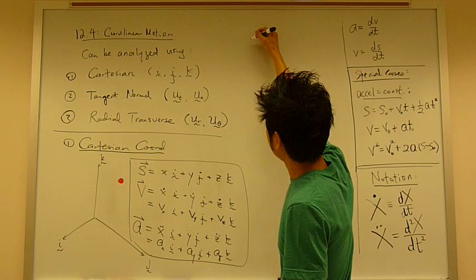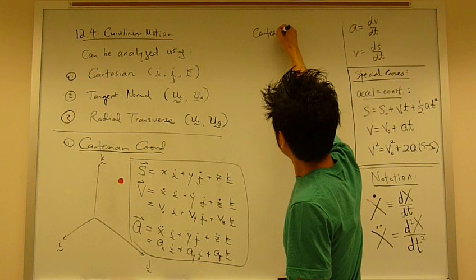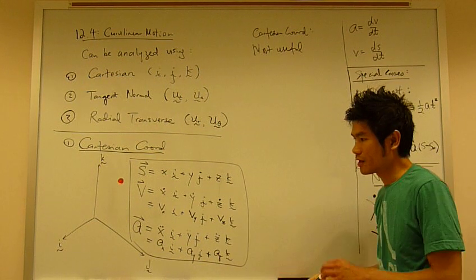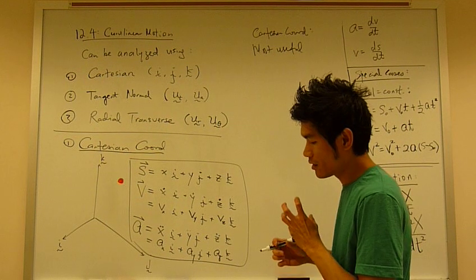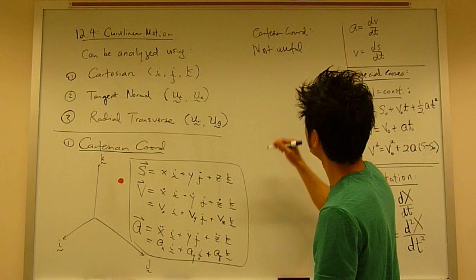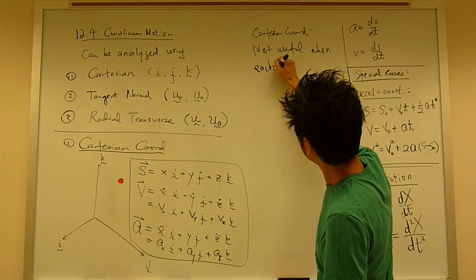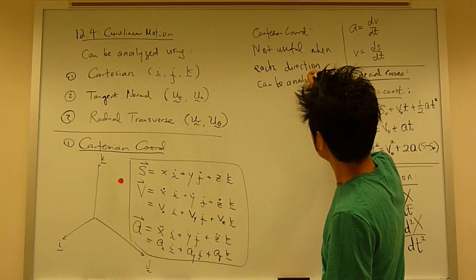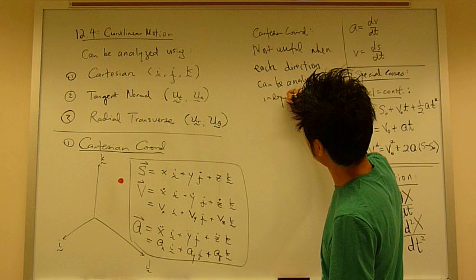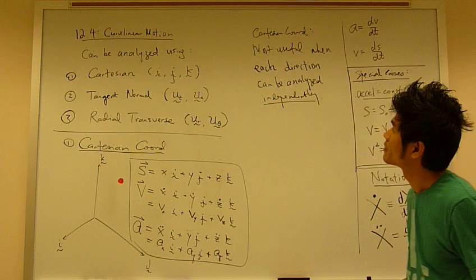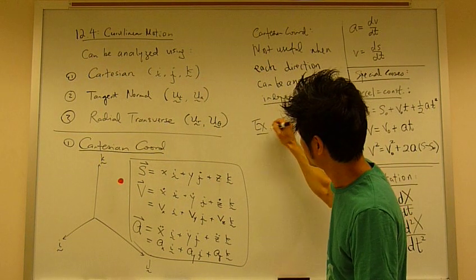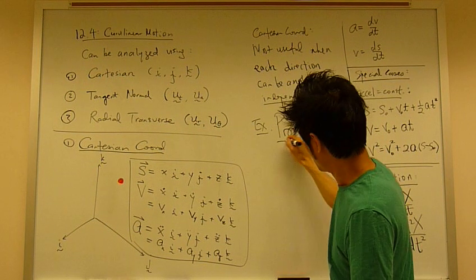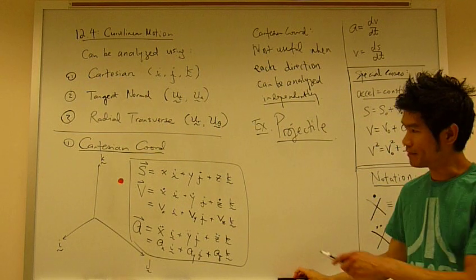For Cartesian coordinate system, it's most useful when you're trying to analyze the type motion where it can be analyzed independently in each direction, where the motion in each direction can be analyzed independently. For example, the most common example of this type of motion is projectile motion. And let's look at what it looks like.